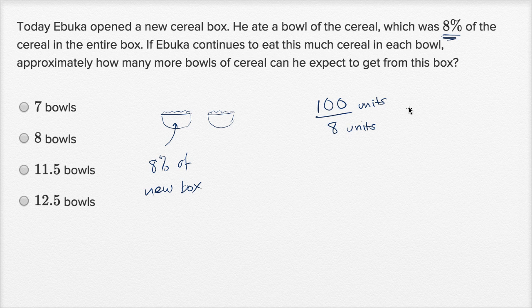Well, 100 divided by 8 is, let's see, 12 times 8 is 96. So it's going to be 12 and 4 eighths, or 12.5. So he's going to be able to get approximately 12 and a half bowls.